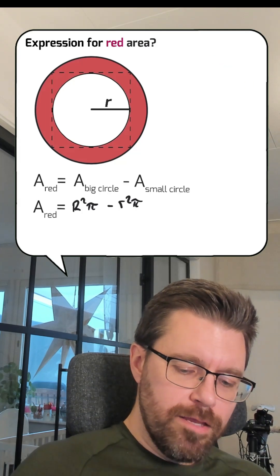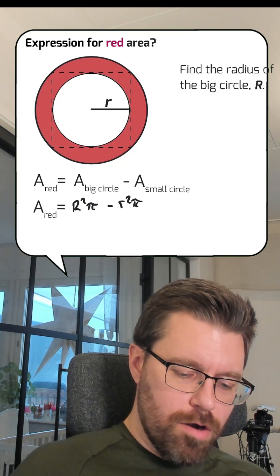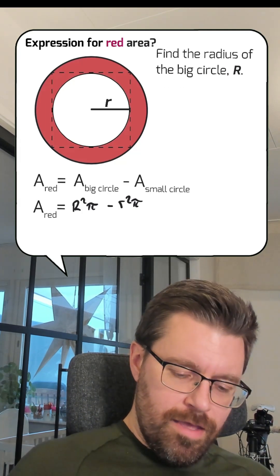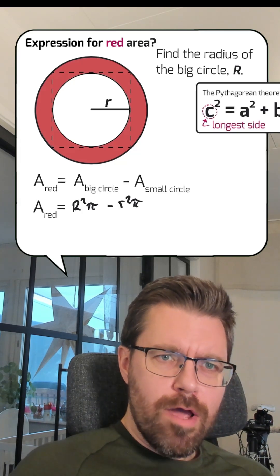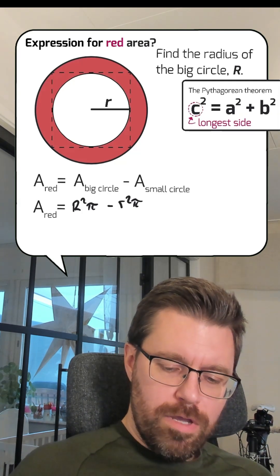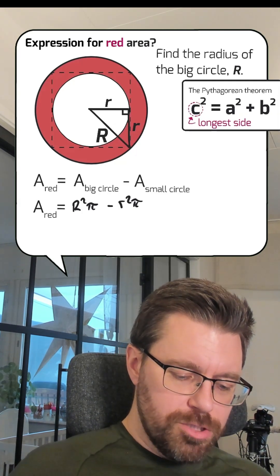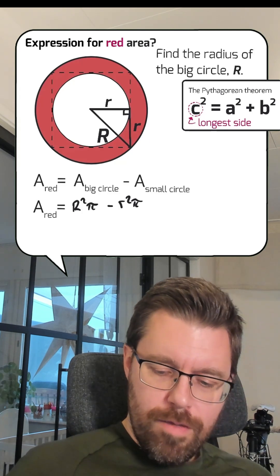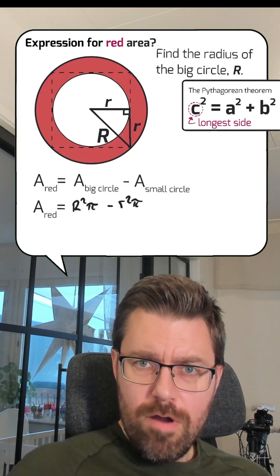So, how to find the radius of the big circle? The big R. We use the Pythagorean theorem, of course. And we can draw a right triangle in the picture and let the big R be the radius of the big circle.